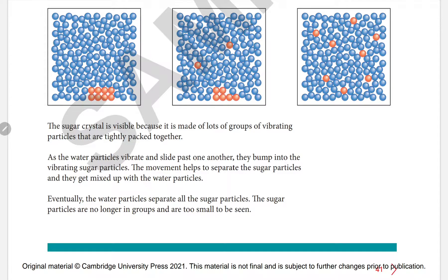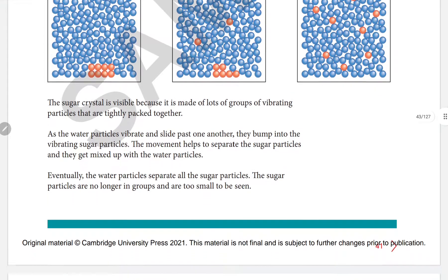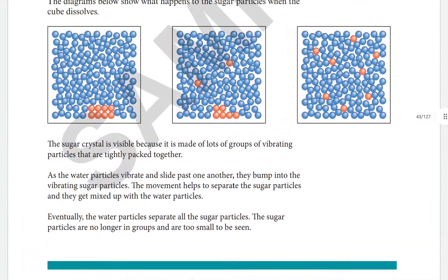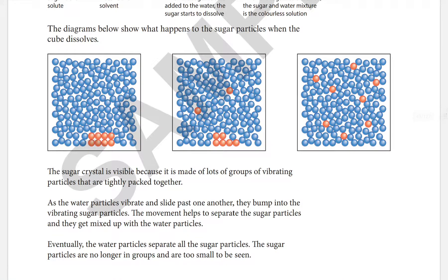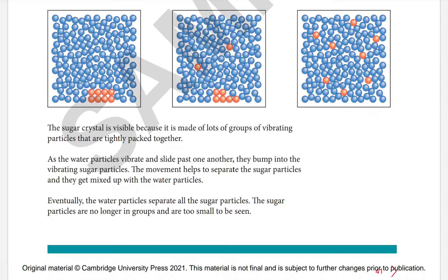As water particles vibrate and slide past one another, they bump into the vibrating sugar particles. This movement helps to separate the sugar particles, which then get mixed up with the water particles. Eventually all the sugar particles are separated and are no longer in groups — they are too small to be seen.